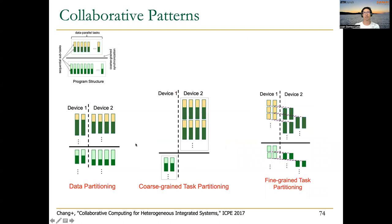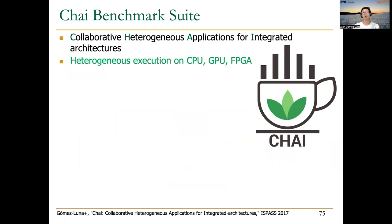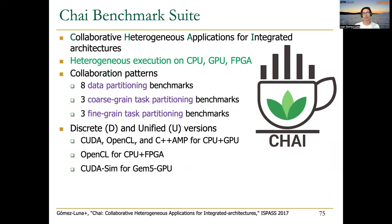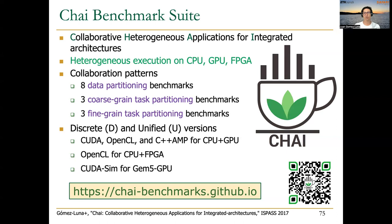This is a summary of the collaborative patterns explained with examples. More examples are available in the longer version of this lecture. All these examples and codes can be found in the CHI benchmark suite, which has discrete and unified versions — for unified memory and pre-unified memory — supporting CUDA, OpenCL, and even GPU simulators. The link to the website and repository is provided.